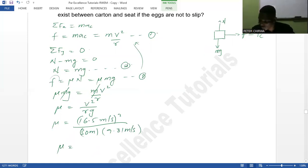So what do we get? So when we punch this one in and divide those two, we get μ equals 0.93. So that is the coefficient of friction that is going to exist so that the eggs do not slip.